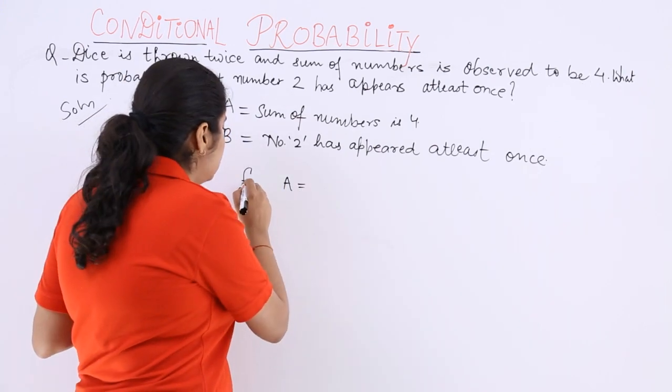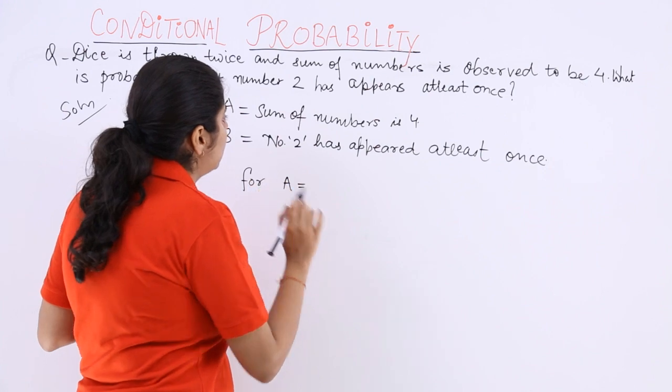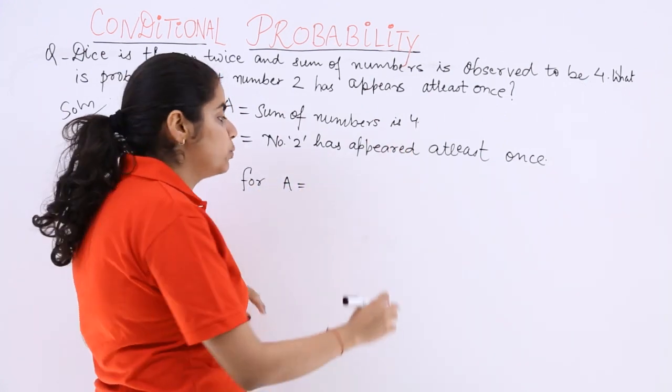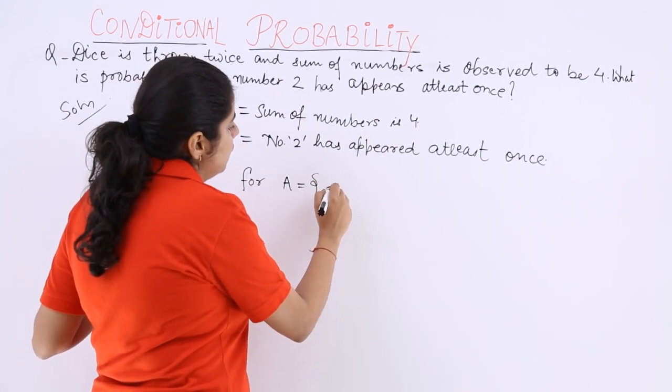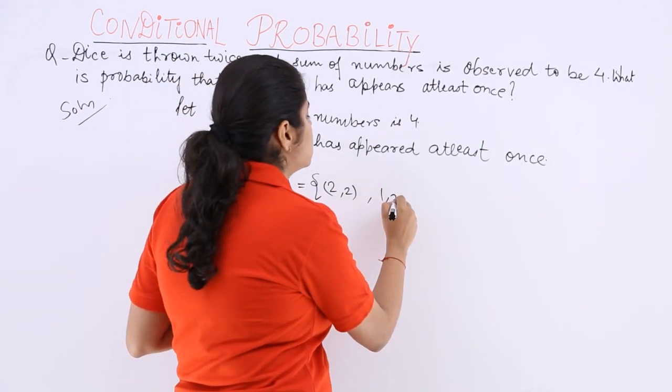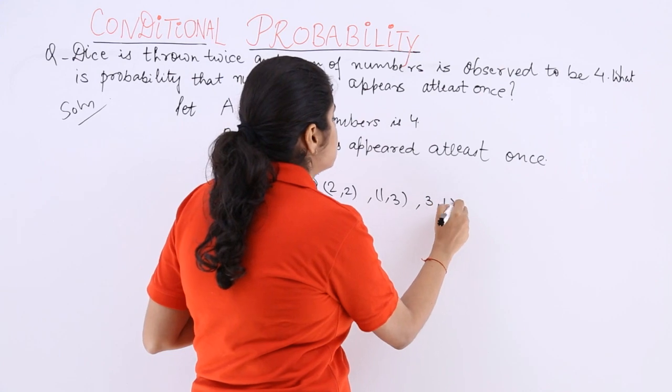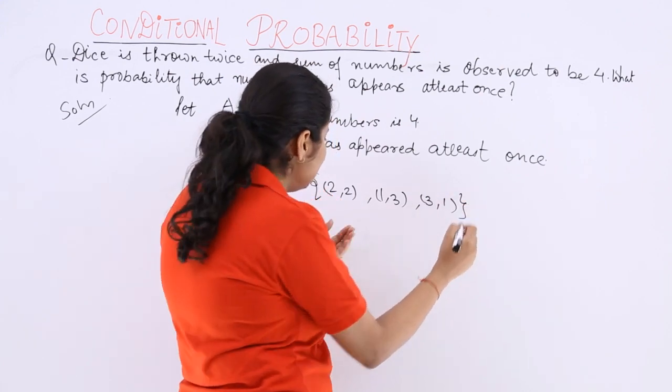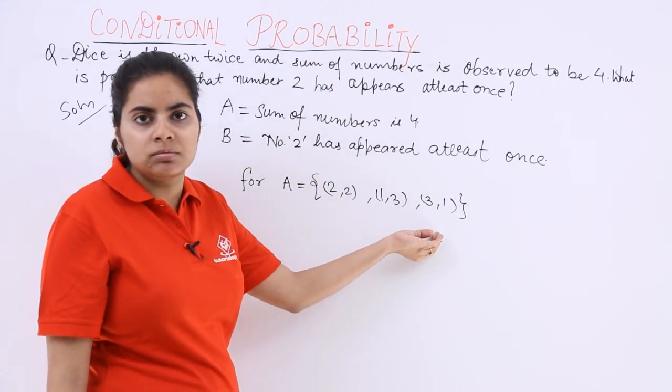So for event A, what can happen? Sum of numbers should be four. Means what cases can happen? Two plus two will give you four. One plus three will give you four. Three plus one will also give you four. Any other cases possible? No.